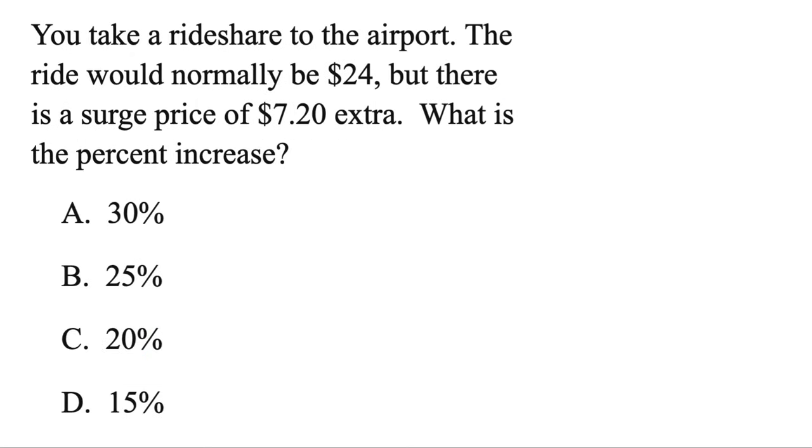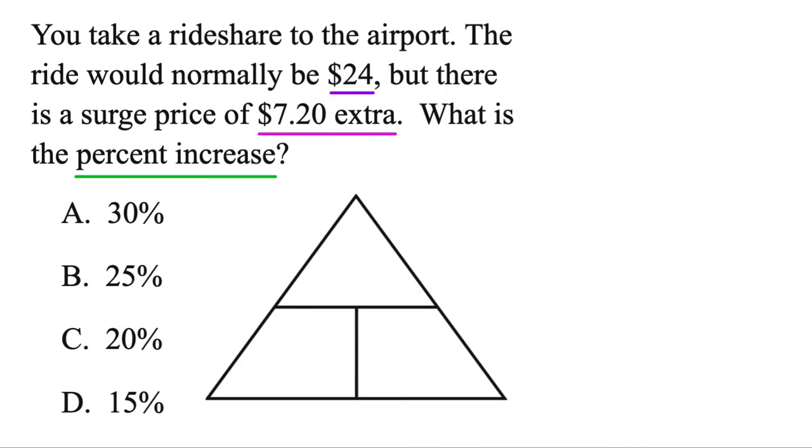Okay, let's look at another. You take a ride share to the airport, the ride would normally be $24, but there's a surge price of $7.20 extra. What is the percent increase? We know we're looking for a percent, we'll do our triangle. The $24, that's the bigger amount, so bottom left. We've got the smaller amount, put it up top. And then just divide those two. So $7.20 divided by $24, that'll give the percent.